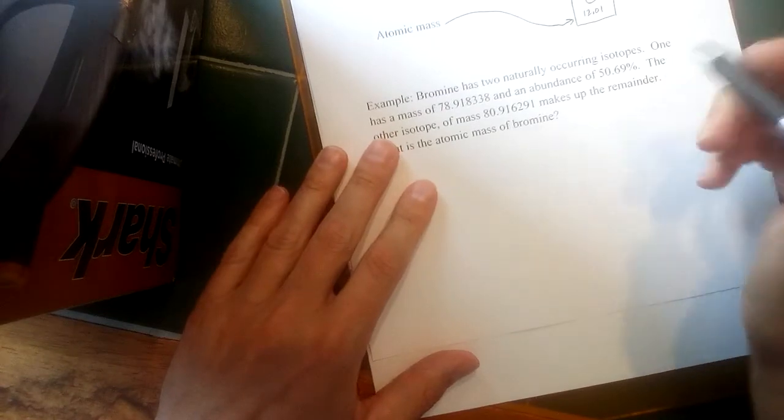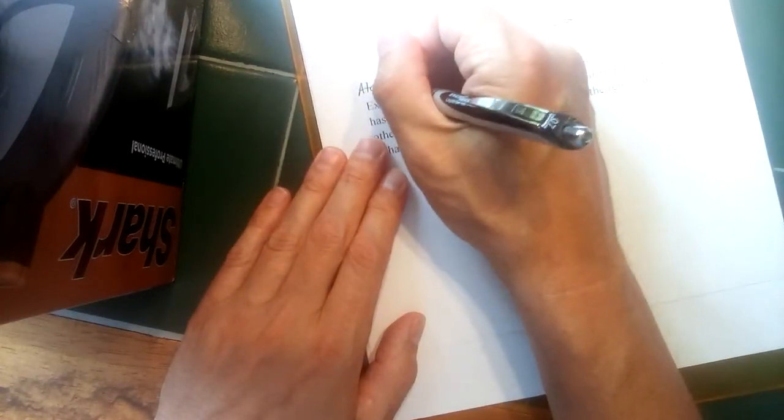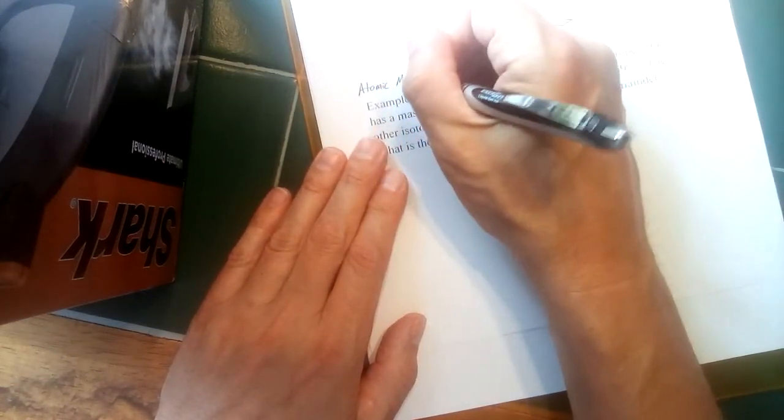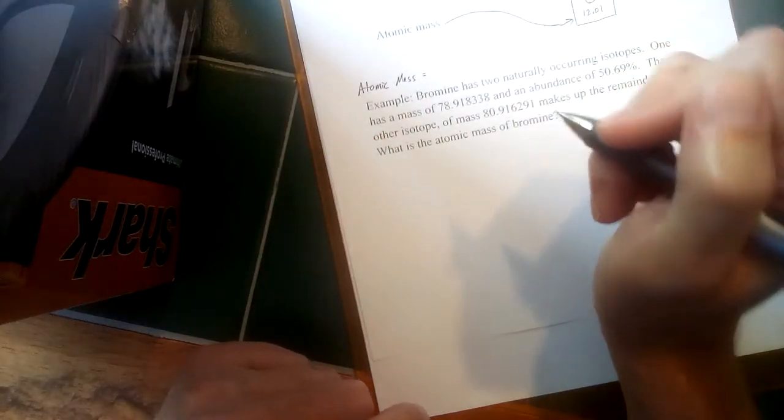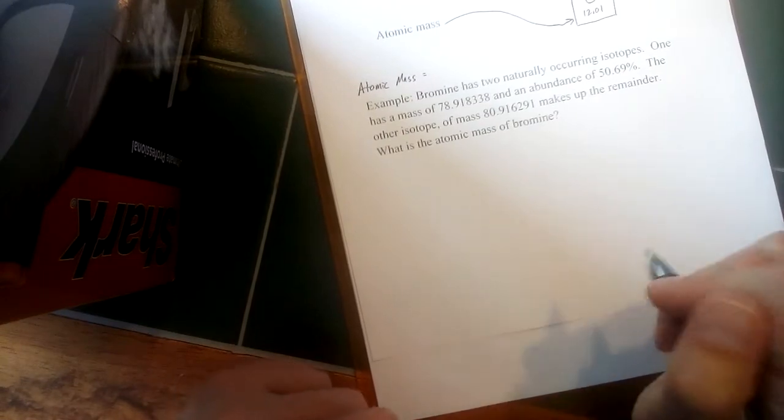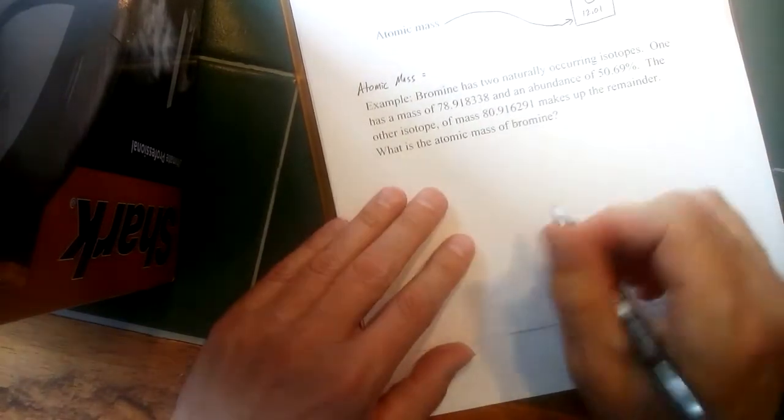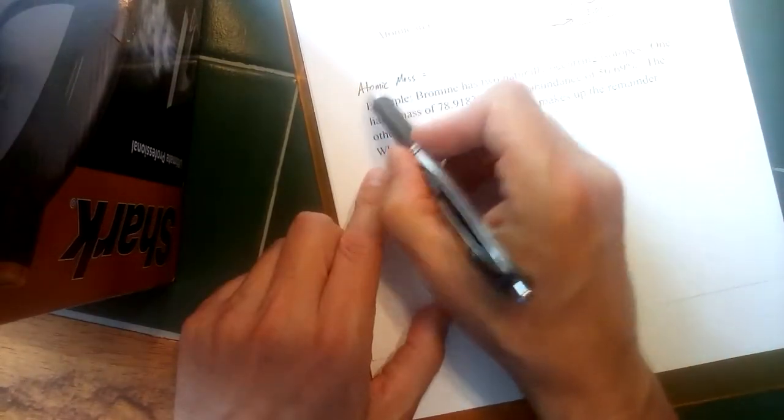The way that atomic mass can be calculated is we need to take a weighted average of the masses of every single isotope that's naturally occurring in the sample. So if we put the atomic mass on one side of an equation, we can take the mass of each isotope.